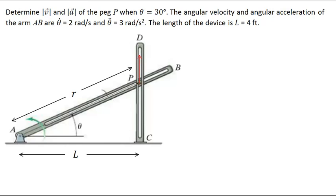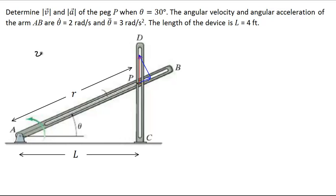We can decompose the velocity into vector form — first in the radial direction, then in the tangential direction. So we have the radial component of velocity and the tangential component. Written in vector form, the velocity of point P equals the magnitude of the radial velocity times the radial unit vector, plus the tangential velocity multiplied by the tangential unit vector.